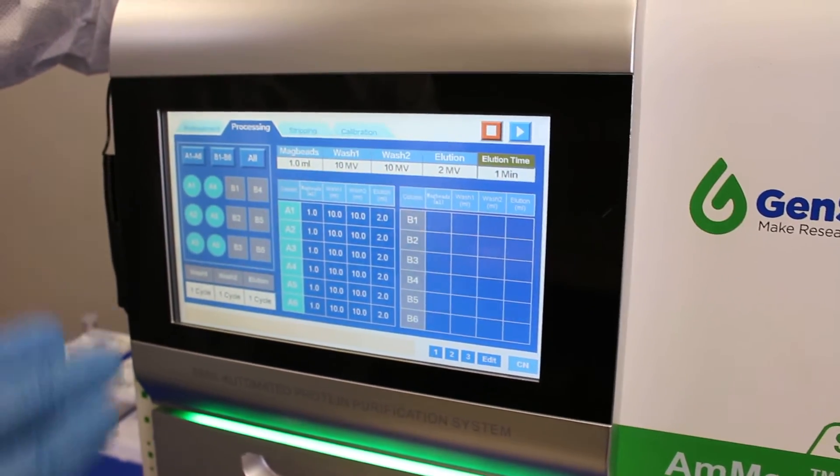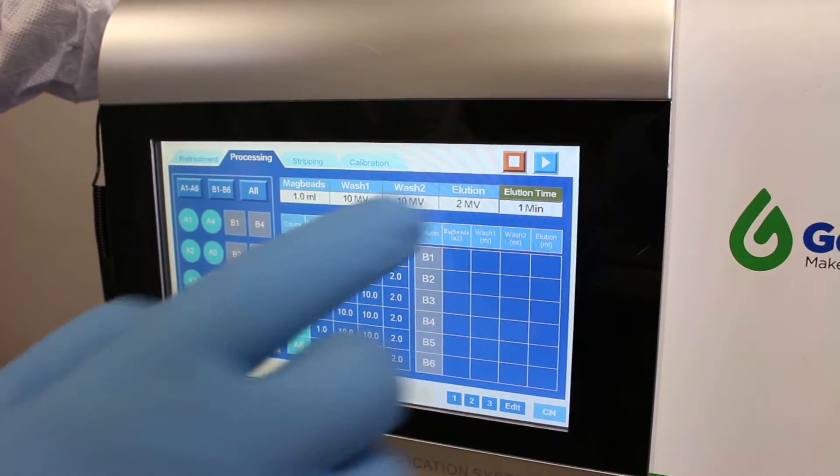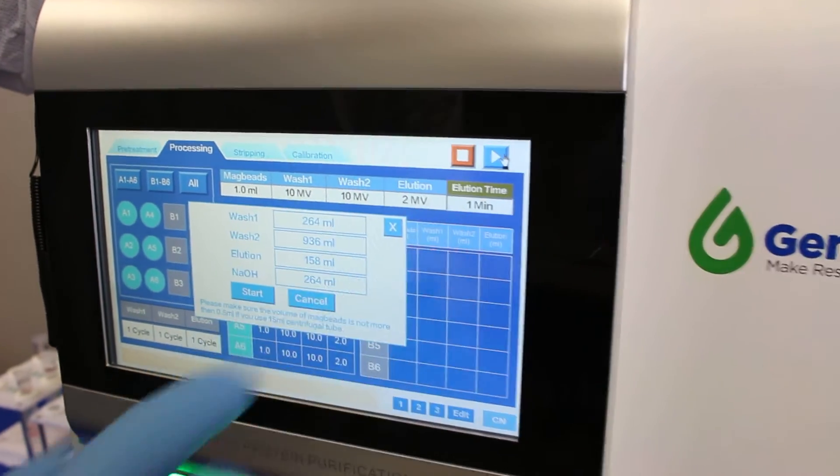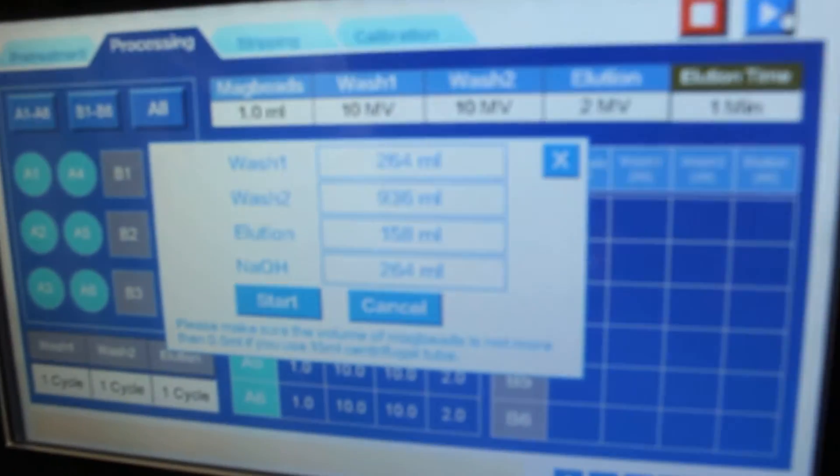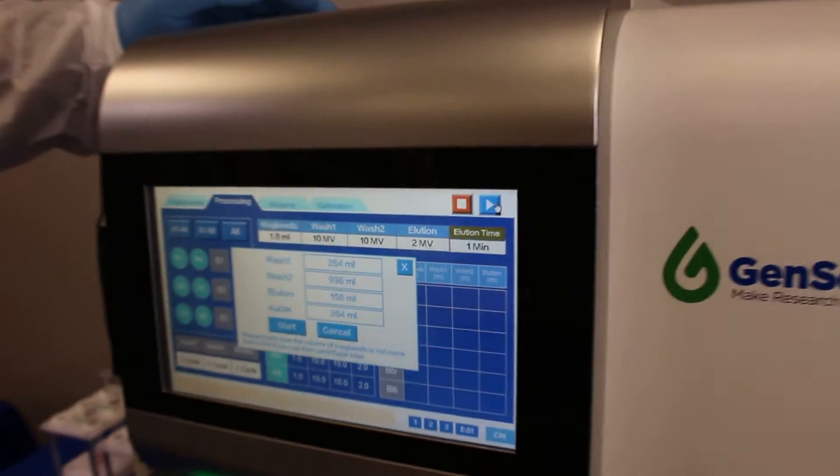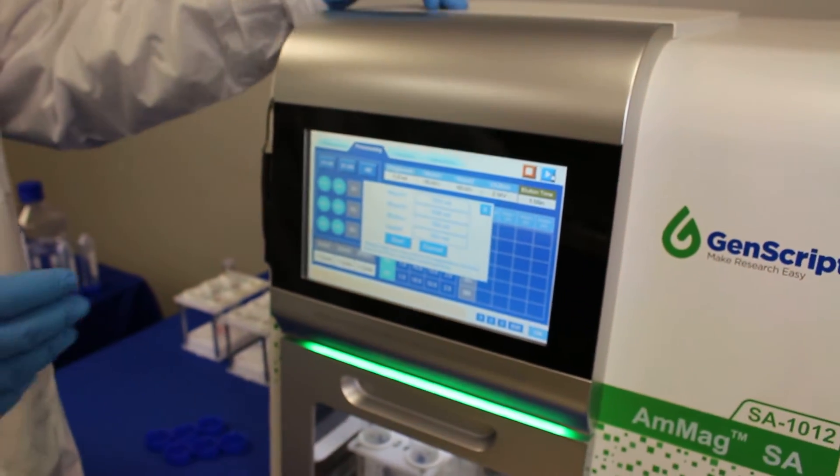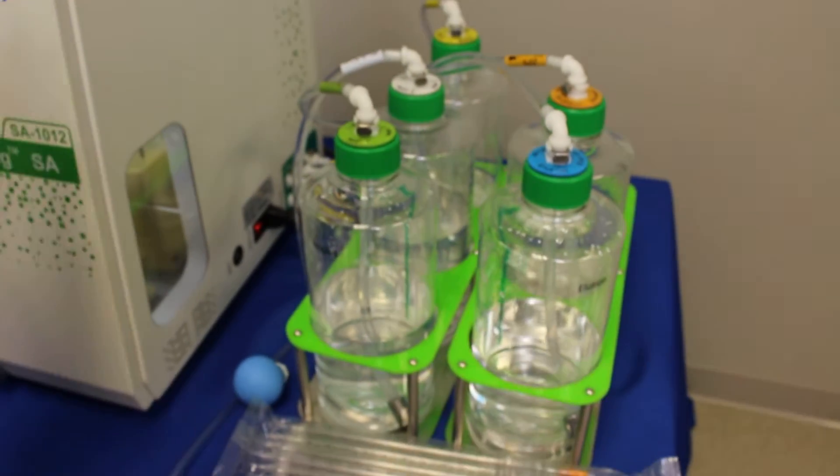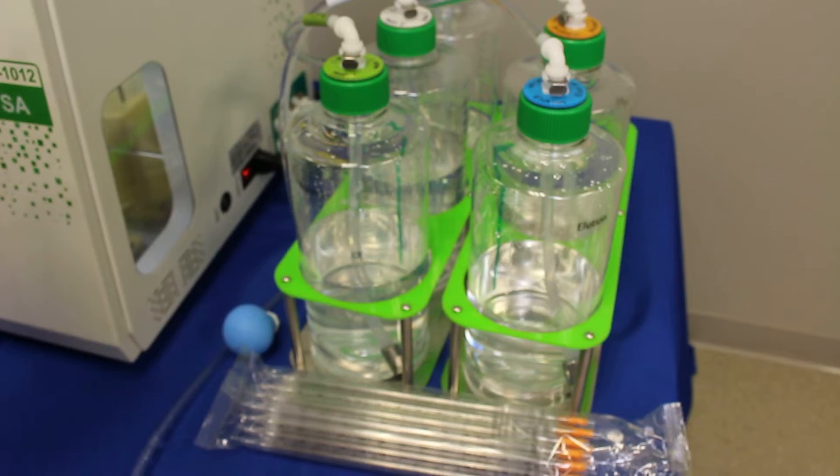We will have one cycle for wash one, one cycle for wash two, and then one cycle for the elution. Once you set up this protocol you just have to hit start. The instrument is going to tell you the amount of buffers that you are going to require for the entire run including the dead volume. You have to manually check that you have enough buffer in your bottles, and once you make sure there is enough buffer, you just start.